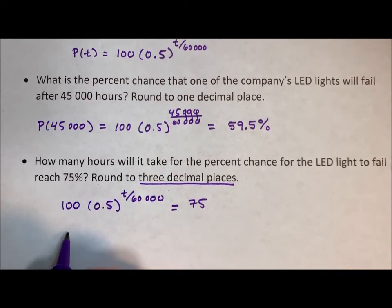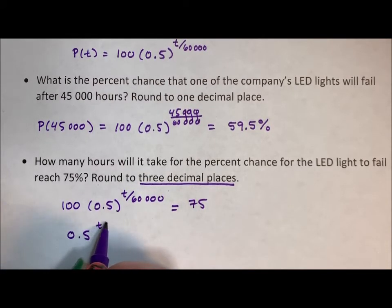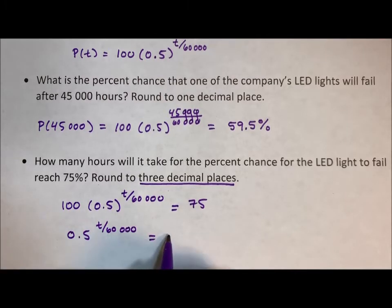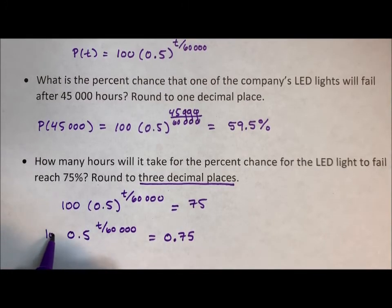Or in other words, 0.5 to the t over 60,000 to equal 0.75, if we want the percent to be a decimal. When the variable is in the exponent position, we take the log of both sides.